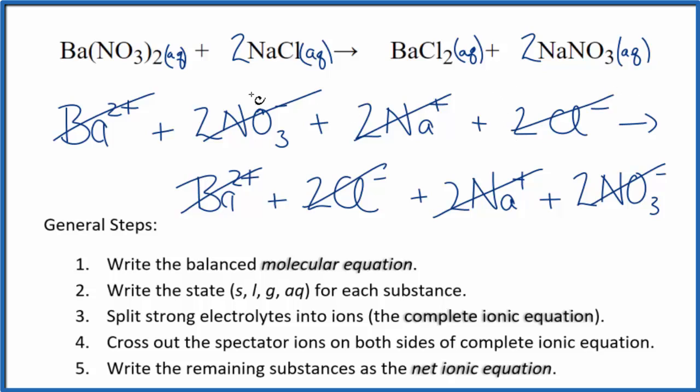This is Dr. B figuring out whether in the equation Ba(NO₃)₂ plus NaCl we have a precipitate or not. We do not. Thanks for watching.